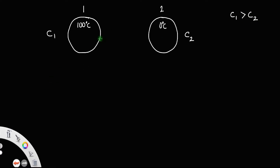When these bodies are brought together — let us assume they are connected using a wire — the hot body starts to lose heat and the cold body starts to gain heat. Let us assume they attain a common temperature t.